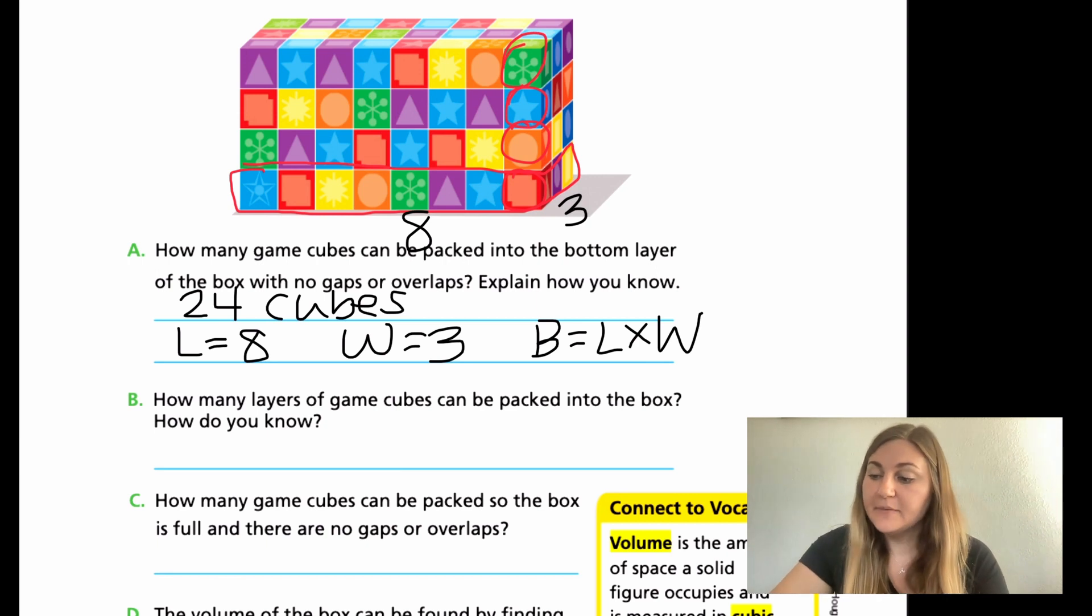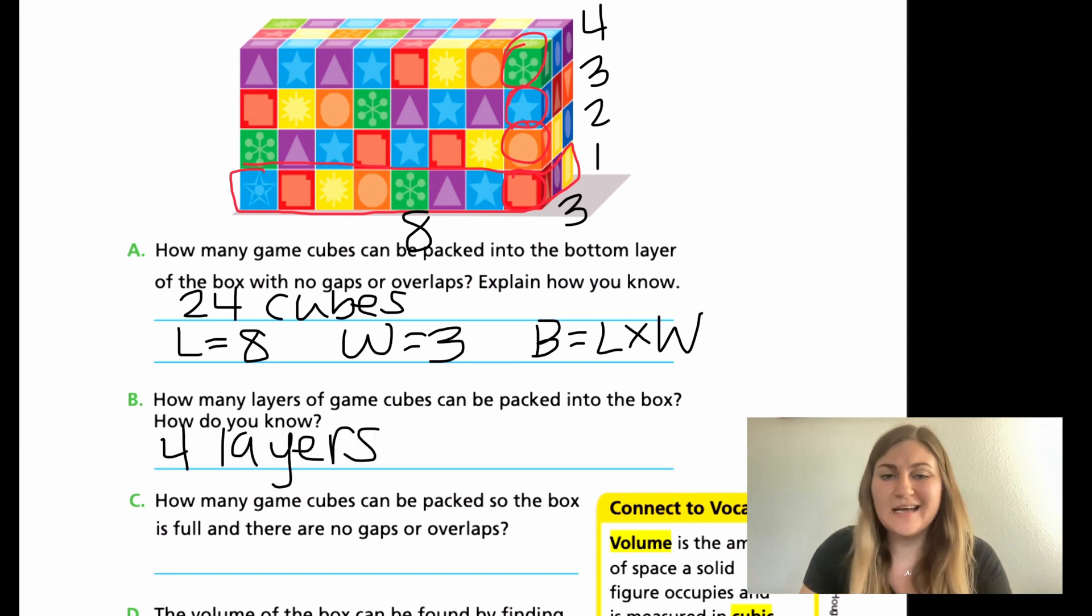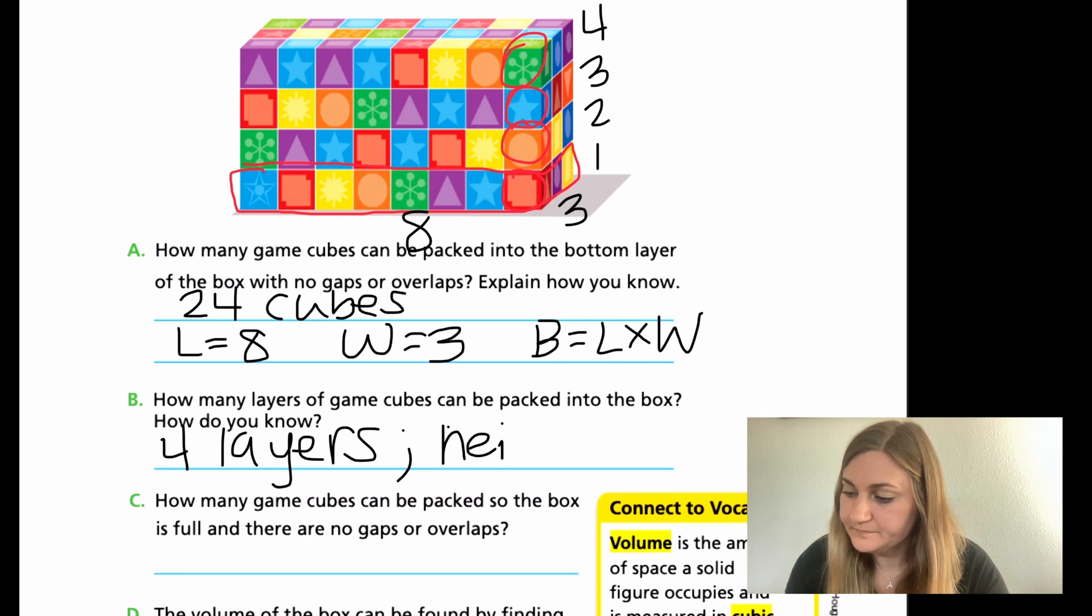For B, how many layers of game cubes can be packed into the box? And how do you know? Remember what I showed you before is the layers. So I have one layer here and then I have two, three, and four. So I'm going to have four layers. And you can say, how do you know? Because it's my height. Because how tall it is is my height. That's how many layers I can have.